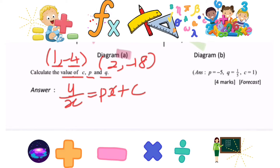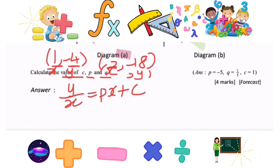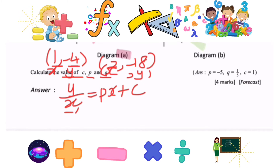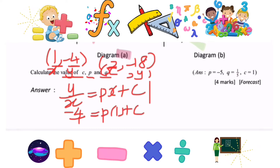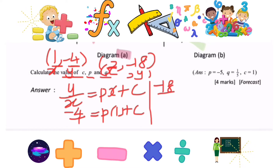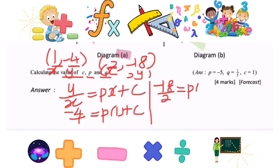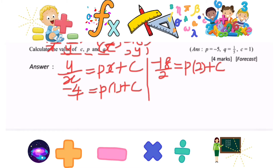Since the small x and small y in the points represent x and y, we substitute: -4/1 = p(1) + c, and for the other point: -18/2 = p(2) + c.